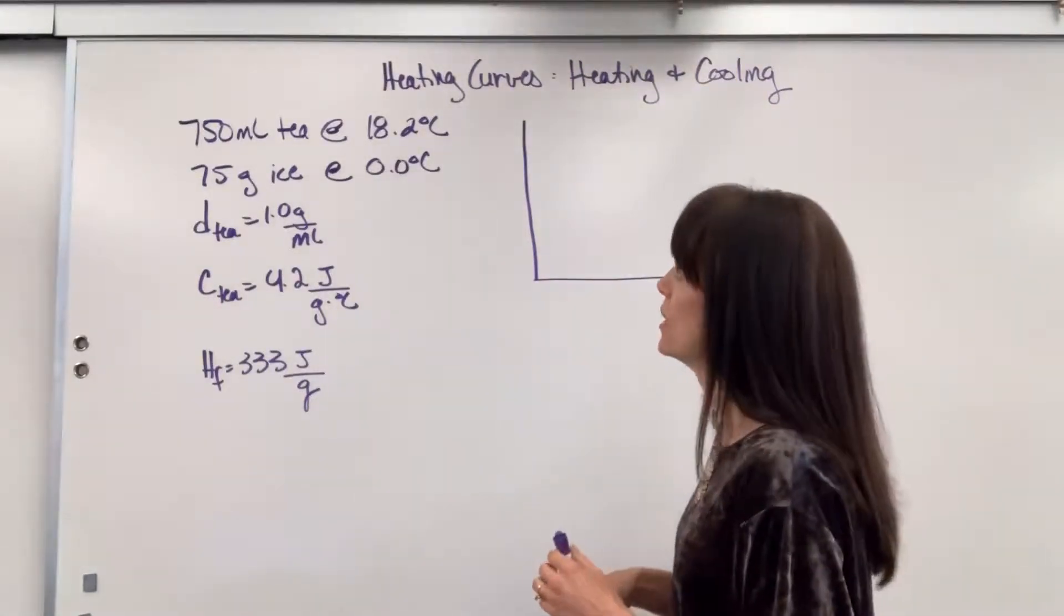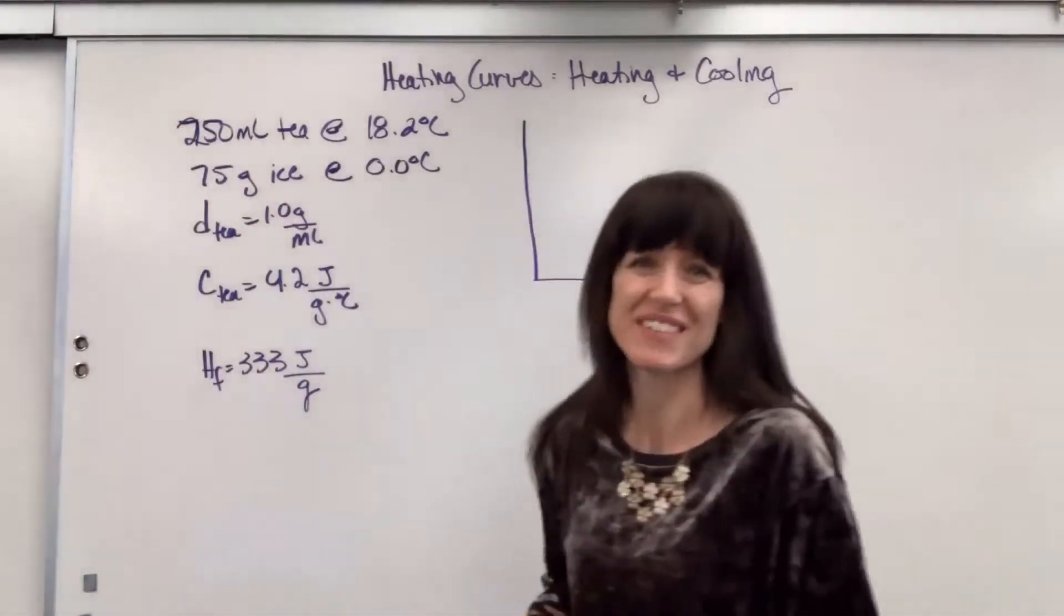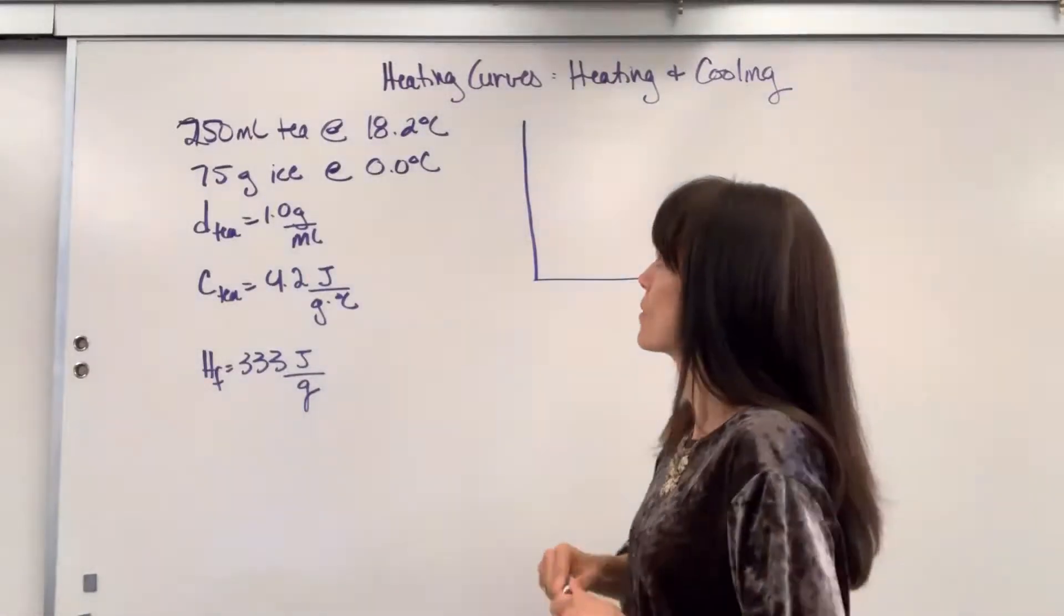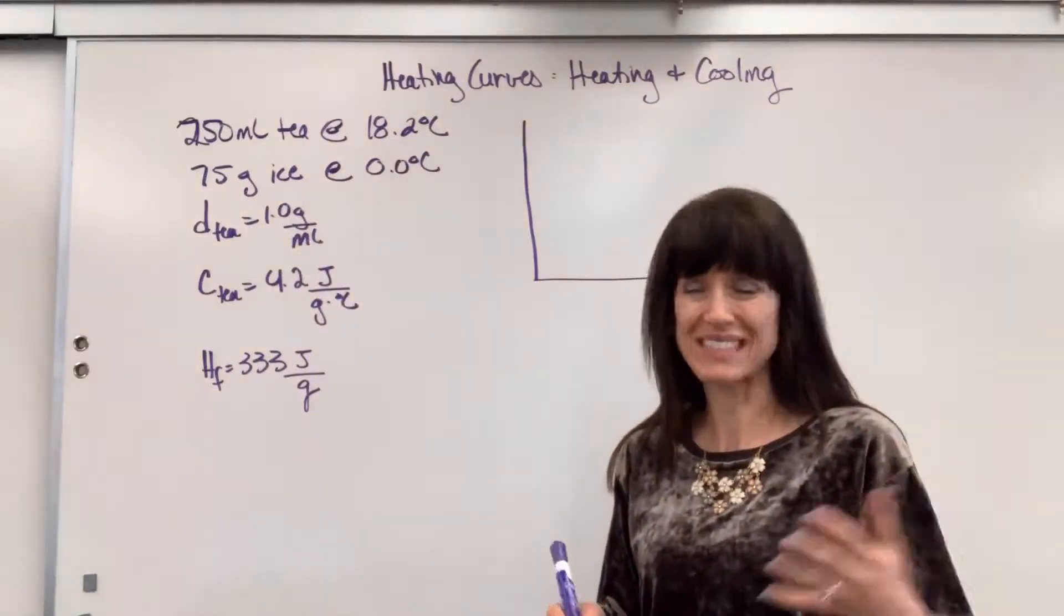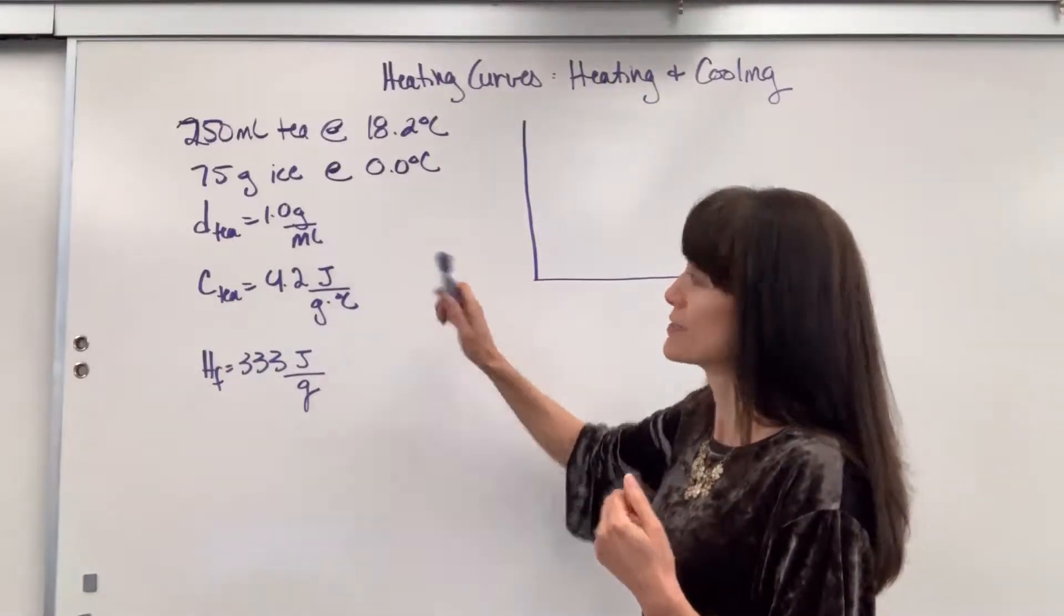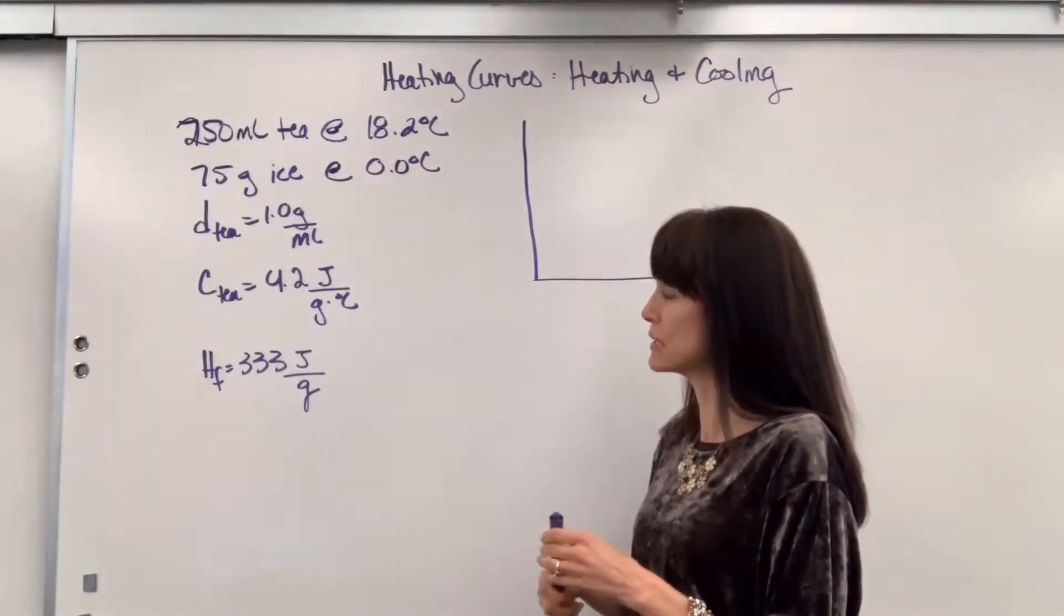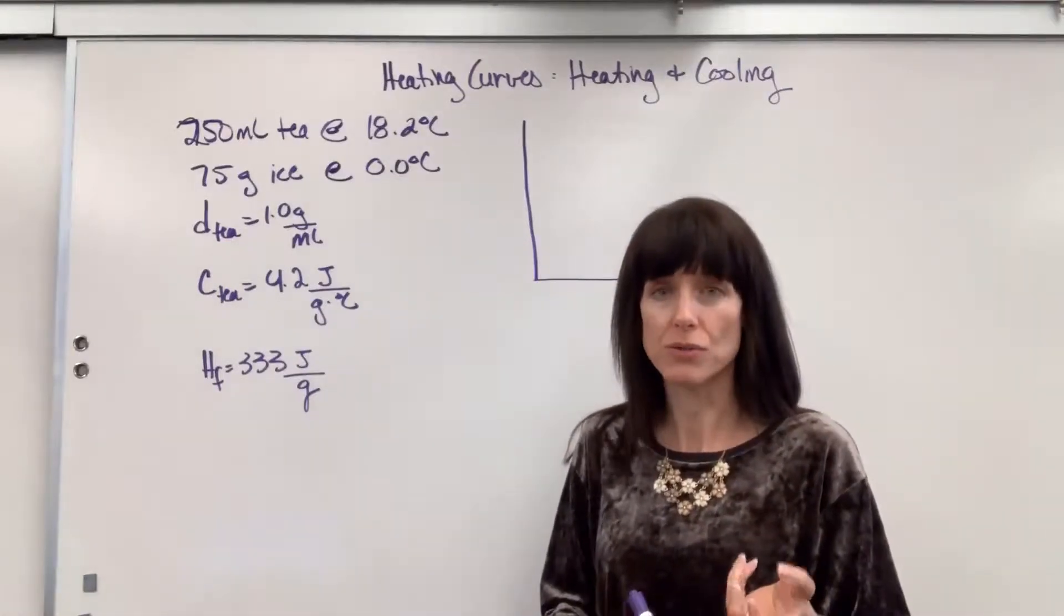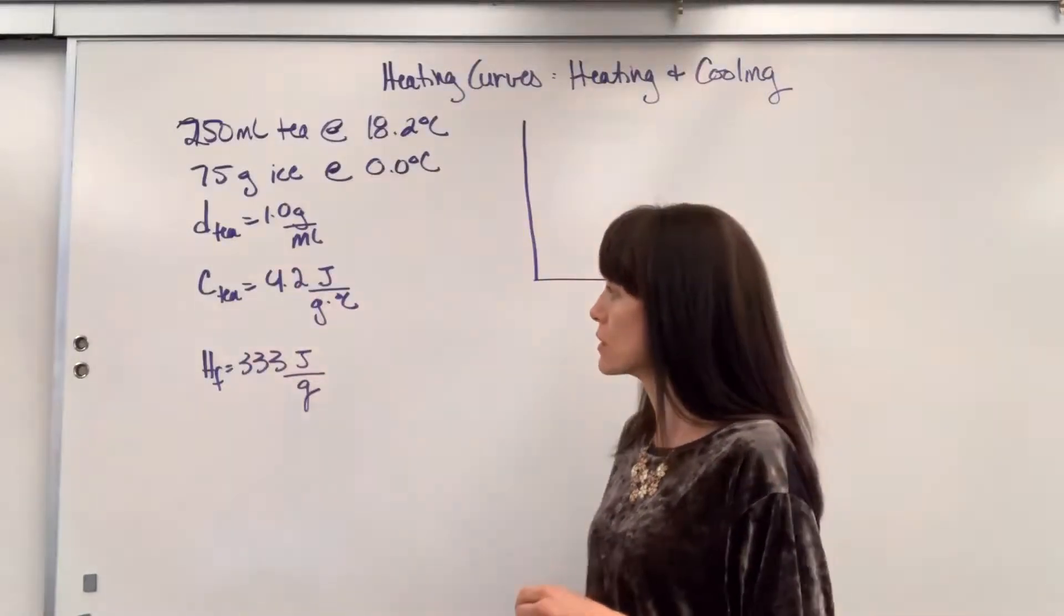Here's our setup. In this question we have 250 mils of tea at 18.2 degrees C and we want to cool it down. So we pour this tea into a container that has 75 grams of ice at zero degrees C. They give us the density of the tea, assuming it's the same as water, one gram per mil. They're saying that the specific heat of tea is really close to water, 4.2 joules divided by gram times degree C. And then of course the heat of fusion, the energy required to melt ice or energy released when water freezes, is 333 joules per gram.